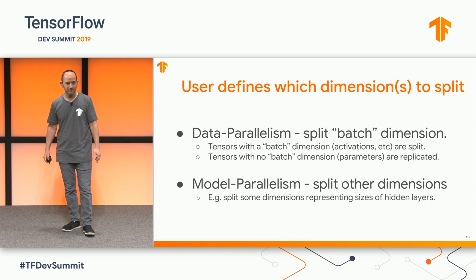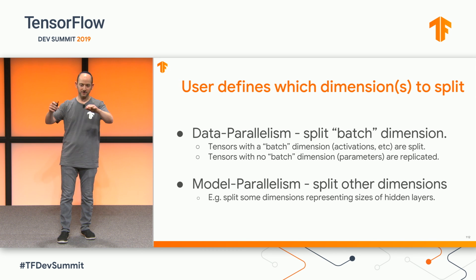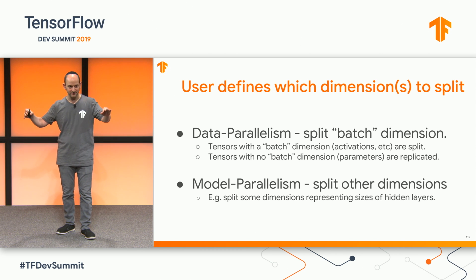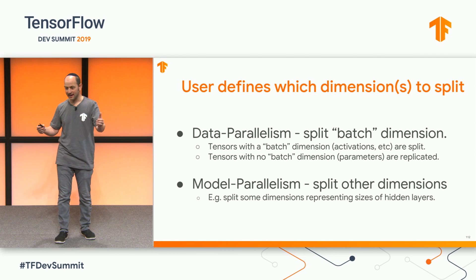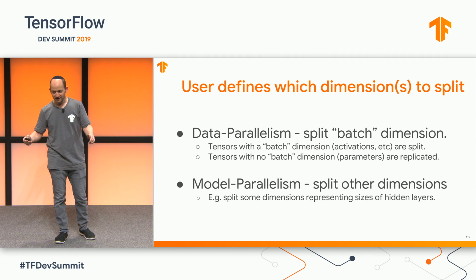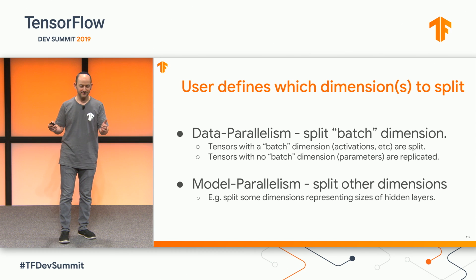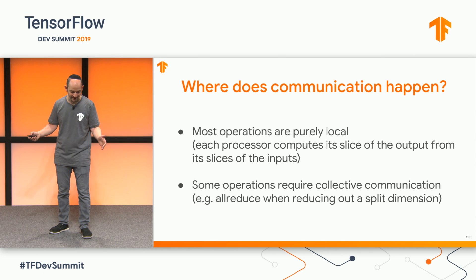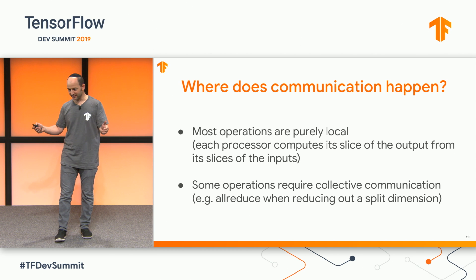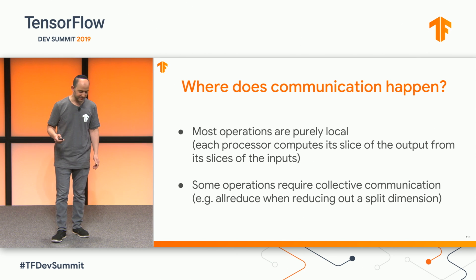So how does this all work? In data parallelism, you can view it as splitting the batch dimension of the computation across all your processors. Any tensor that has a batch dimension is going to be split across all the processors, and any tensor that does not have a batch dimension — meaning the parameters — gets fully replicated. Now we're going to do the same thing, but for model parallelism we will choose different dimensions to split, such as dimensions representing the sizes of hidden layers. Usually an operation will not involve communication, but some operations will involve collective communication like all-reduce, particularly when you're reducing out split dimensions.